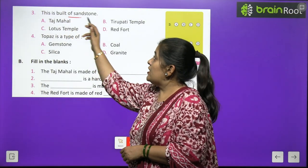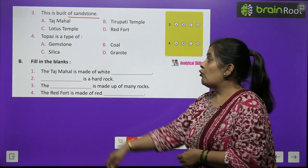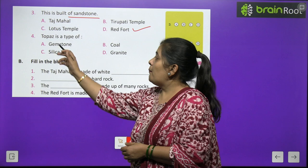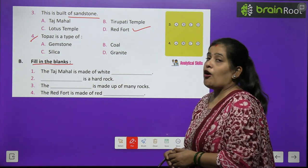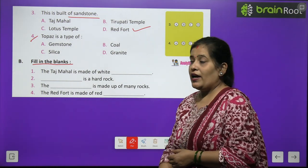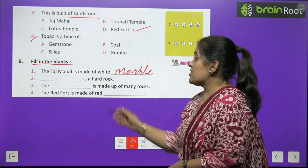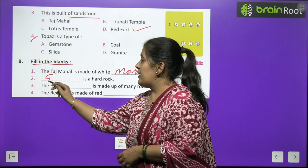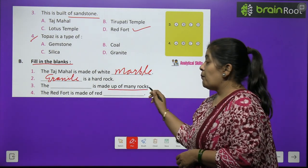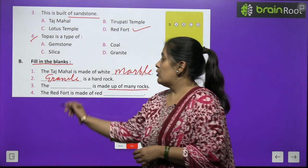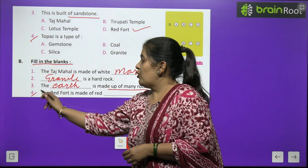Now fill in the blanks. Number one: The Taj Mahal is made up of white marble (M-A-R-B-L-E). Number two: A hard rock is granite (G-R-A-N-I-T-E). Number three: The earth is made up of many rocks (E-A-R-T-H). Number four: you will do by yourself.